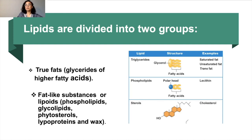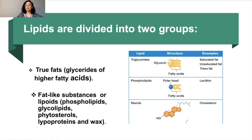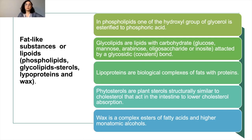Lipids are divided into two groups. The first group is true fats — glycerides of higher fatty acids — presented by triglycerides. The second group is fat-like substances or lipoids, which are mostly complex compounds and include phospholipids, glycolipids, lipoproteins, and wax.